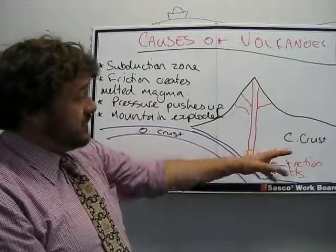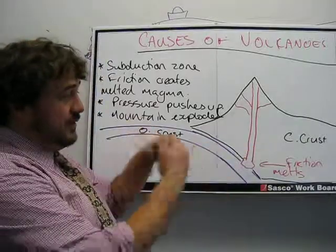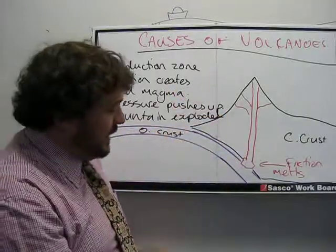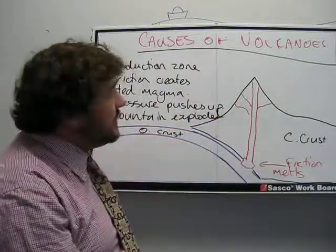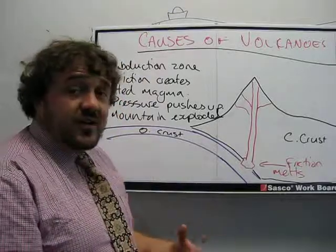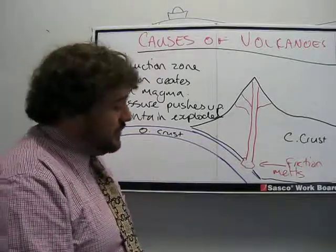So here's oceanic crust and continental crust coming together, and there are our volcanoes. That's how a subduction zone causes a volcano.